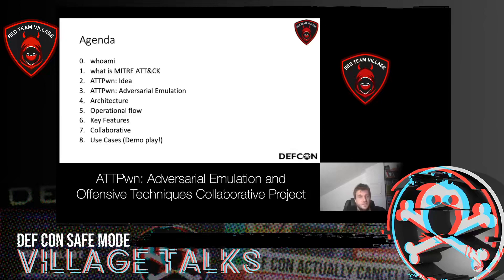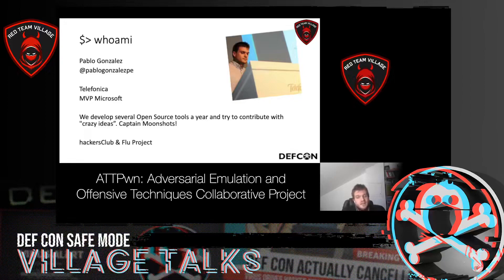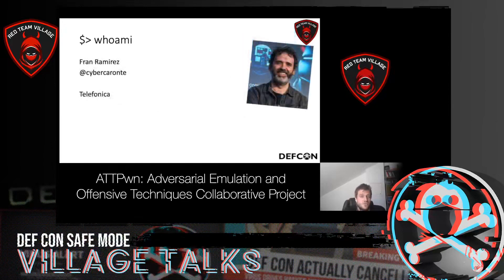Let's introduce ourselves. I am Pablo González. I work at Telefonica in Spain in the pre-innovation department where we play with cybersecurity and artificial intelligence. We develop several open source tools and try to contribute with crazy ideas. I am an MVP of Microsoft since 2017, I've written books in Spanish about cybersecurity, and I teach at several universities in Spain. My partner Fran Ramírez works with me at Telefonica in the same pre-innovation department, focusing on cybersecurity and machine learning projects. He has worked several years in the USA as a system administrator and has written books about Docker and machine learning.